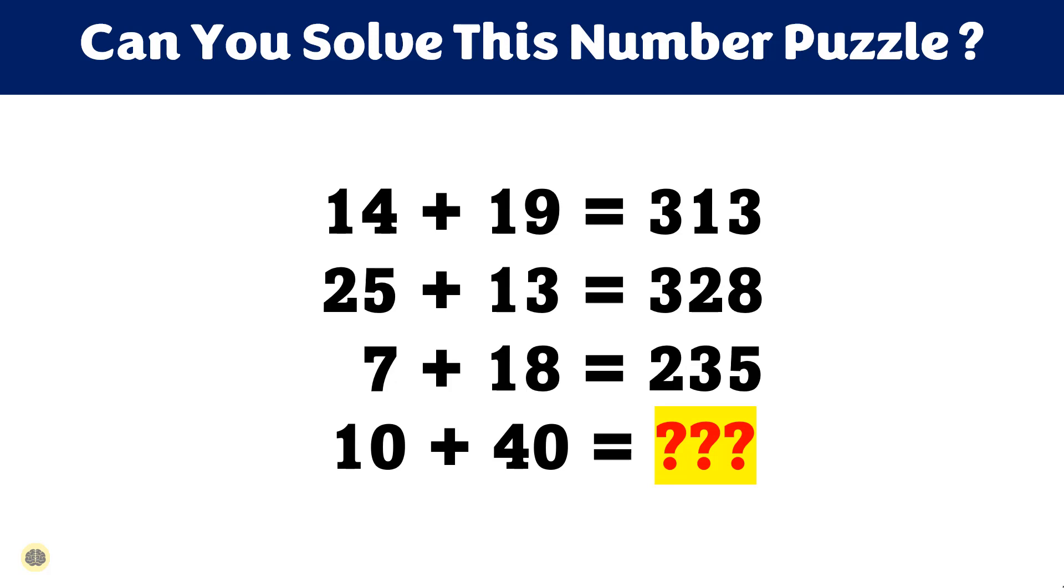It is given that 14 plus 19 equals 313, 25 plus 13 equals 328, 7 plus 18 equals 235, and we are supposed to find the value of final row that is 10 plus 40.